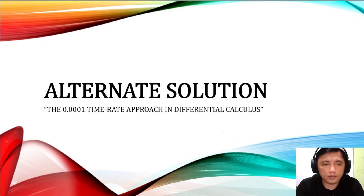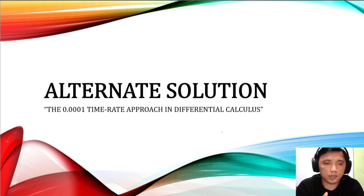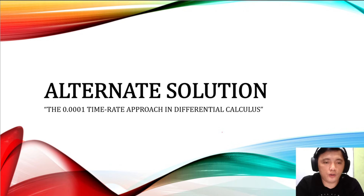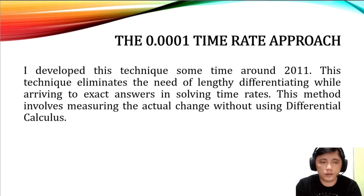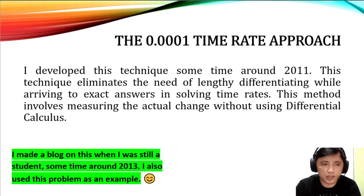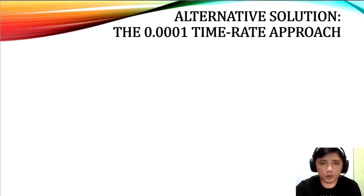Now I will present an alternate solution — the 0.0001 time rate approach in differential calculus. This technique was developed around 2011 and eliminates the need for lengthy differentiation while arriving at exact answers in solving time rates. It involves measuring the actual change without using differentiation formulas, though we are still working within differential calculus.